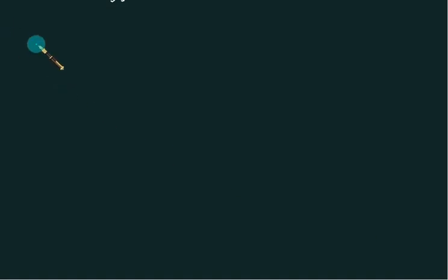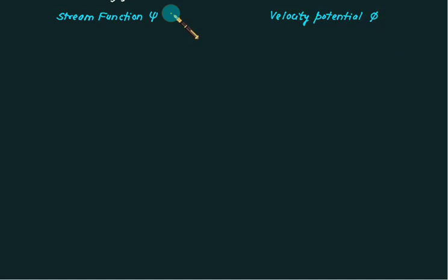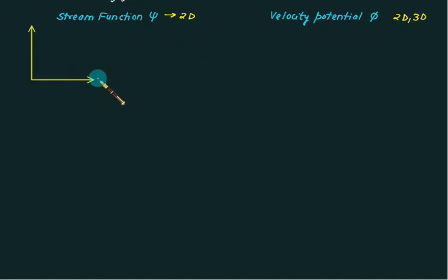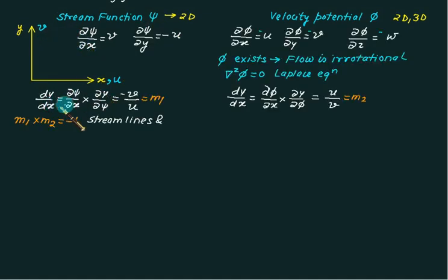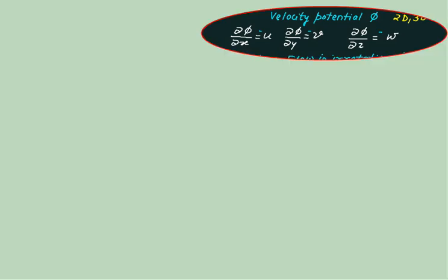In fluid kinematics, we have two important scalar functions. One is called the stream function, represented by psi (ψ), and the second is velocity potential, represented by phi (φ). The stream function is defined only for two-dimensional flow, and velocity potential is defined for three-dimensional flow. Along the x-axis we have the u component of velocity, and along the y-axis the v component. Differentiating ψ with respect to x gives v, and differentiating ψ with respect to y gives minus u. Differentiating φ with respect to y gives v, and with respect to z gives w.